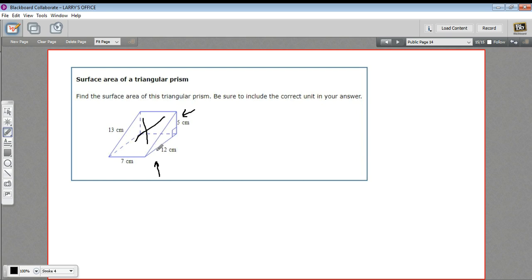And in addition to the three rectangles, there are two triangles. So you can see them on either side. So we need to figure out the area of all five of those parts and just add them together. That will give us the surface area of this triangular prism.